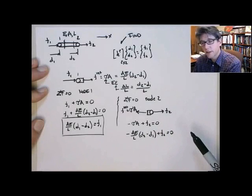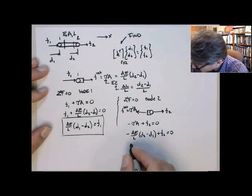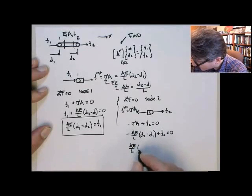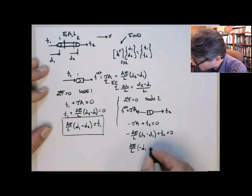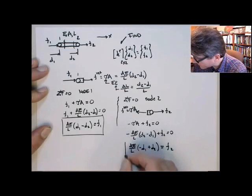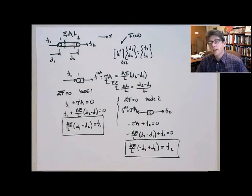let's bring F2 to the right-hand side, and then we'll multiply by minus 1 to get the F positive. We get AE on L minus D1 plus D2 equals F2. Okay, so that's the force balance on the second node.